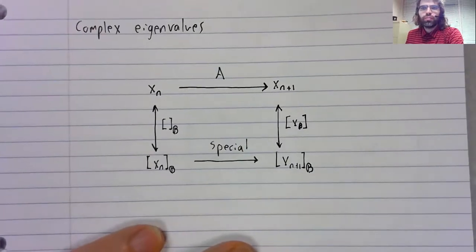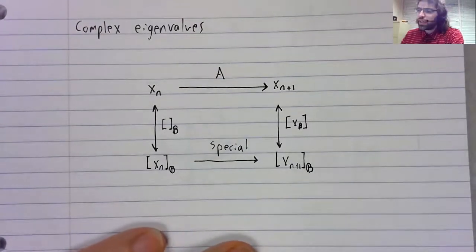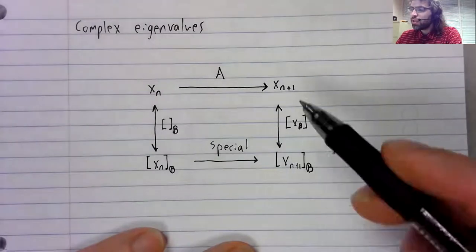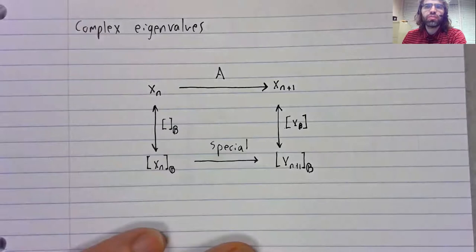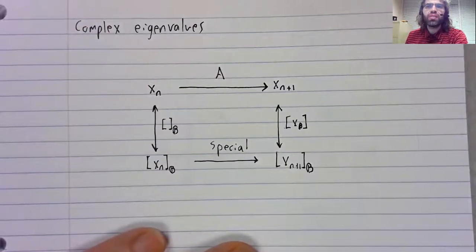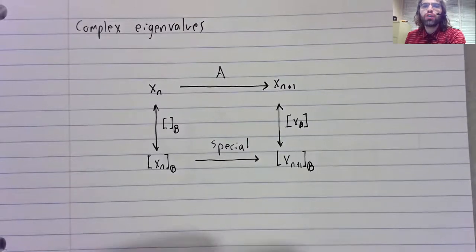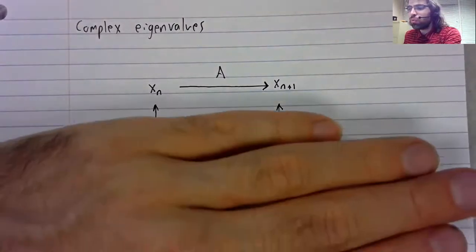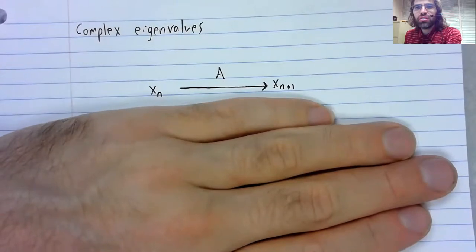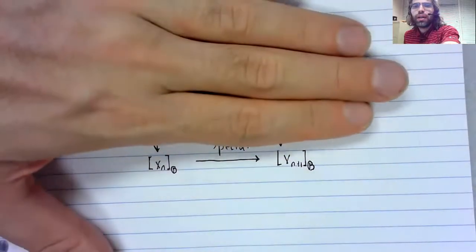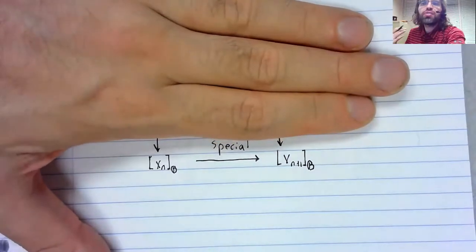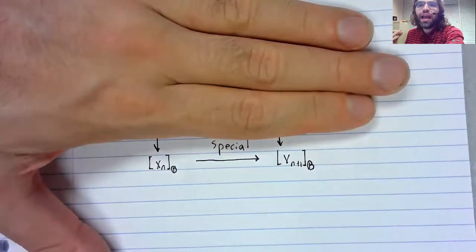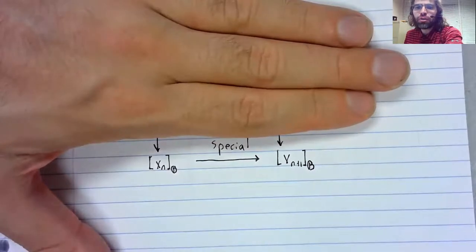So here's our diagram. And remember that this and this are isomorphisms. And remember what that means. Isomorphic objects are identical.